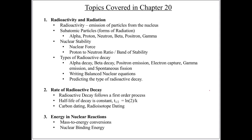So in chapter 20, it's broken into three parts. The first part is radioactivity and radiation. We're going to talk about radioactivity, which is the emission of particles or photons from the nucleus, and what are the subatomic particles and the types of radioactive decay that can happen.